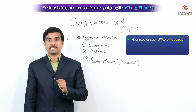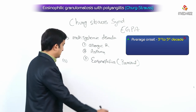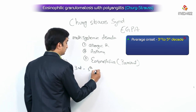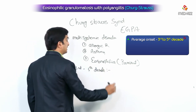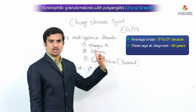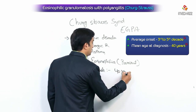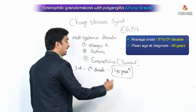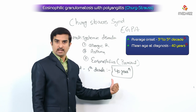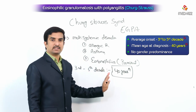What is the average onset of the disease? This is an MCQ question. The average onset is approximately the 3rd to 5th decade of life. But in the exam, they will ask the mean age for Churg-Strauss syndrome, which is 40 years. Remember that EGPA does not exhibit gender predominance.